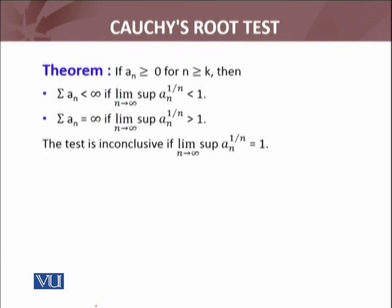Let's see what Cauchy's Root Test is saying. If a_n is greater than or equals to 0 for n greater than or equals to k, then summation a_n less than infinity means the series converges if limit superior of that sequence, which is a_n raised to power 1 over n, the nth root of the nth term is less than 1. Then we will conclude that the series is convergent.